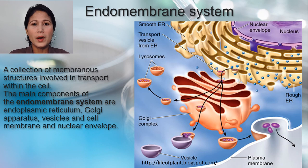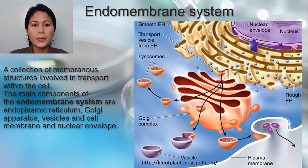The endomembrane system is a collection of membranous structures involved in transport within the cell. The main components of the endomembrane system are the endoplasmic reticulum, the Golgi apparatus, vesicles, and cell membrane and nuclear envelope.